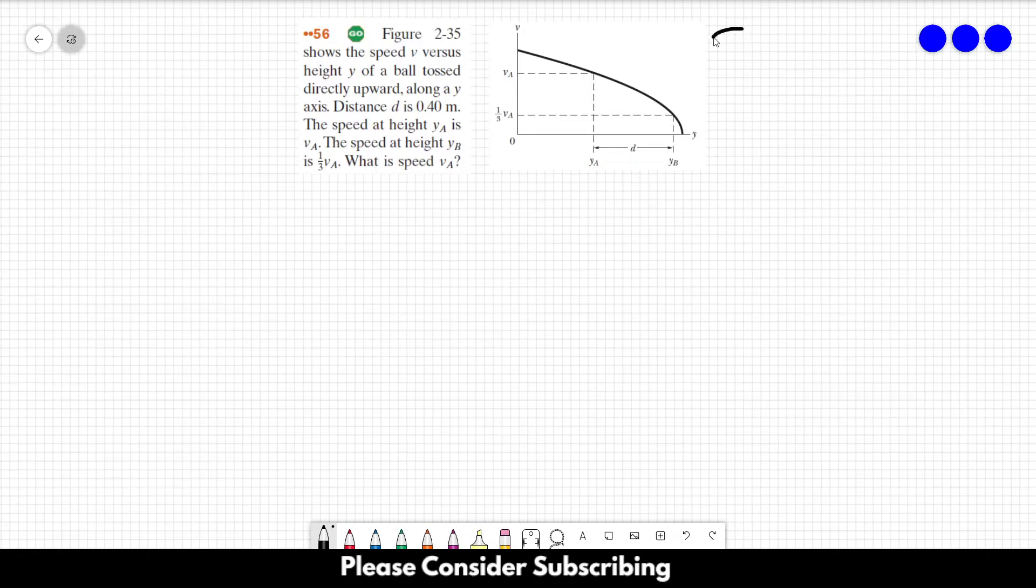Number 56. This figure shows the speed V versus height Y of a ball tossed directly upward along a Y axis. Distance D is 0.4 meters. The speed at height YA is VA. The speed at height YB is a third of VA. What is speed VA?